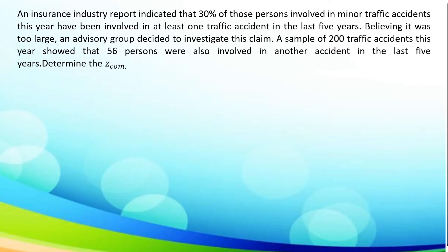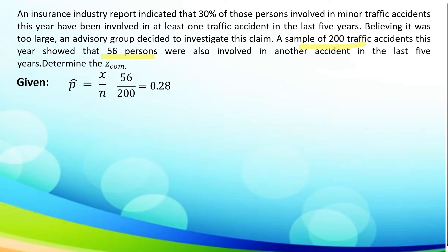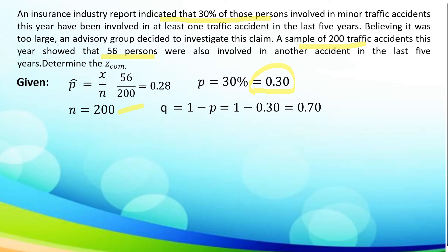Let us take another one. An insurance industry report indicated that 30% of those persons involved in minor traffic accidents this year have been involved in at least one traffic accident in the last five years. Believing it was too large, an advisory group decided to investigate this claim. A sample of 200 traffic accidents this year showed that 56 persons were also involved in another accident in the last five years. Let us determine Z-com. P-hat is equal to X over N, where X is 56 and N is 200, so 56 divided by 200 is equal to 0.28. The given population is 30%, converted to decimal, is 0.30. The sample is 200. Getting the value of Q: 1 minus P, where P is 0.30, so 1 minus 0.30 is 0.70.